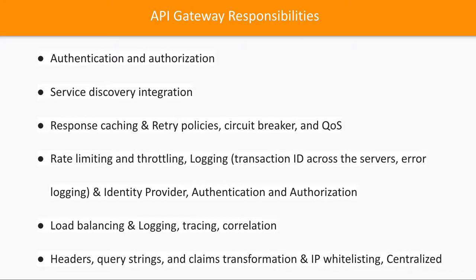The API Gateway provides all these functionalities: authentication, authorization, service discovery integration, response caching — so the gateway caches responses from multiple services for faster replies on repeated requests — retry policy, circuit breaker, and rate limiting and throttling. If a particular client is making too many calls and risks bringing down a service, you can put a rate limit on requests per second that a client can make.